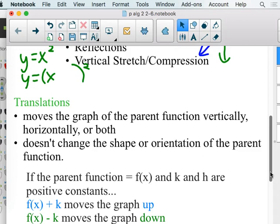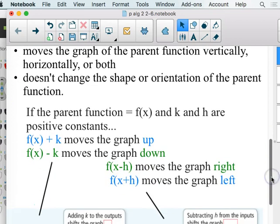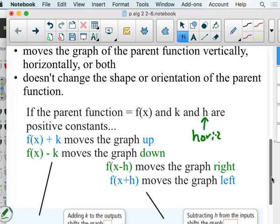It doesn't change the shape or the orientation of the parent function. Orientation, you should remember from geometry, that's what reflection is. You have to reflect something that changes its orientation. And then, if the parent function equals f of x, h and k are going to be positive constants. Now what are they doing? Well, first of all, they're going to use h to talk about that horizontal shape. So that's the right and left one that we're going to have to be careful with. Because it's always backwards what we would think.